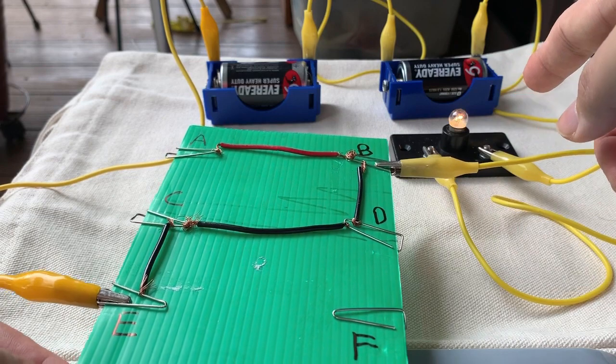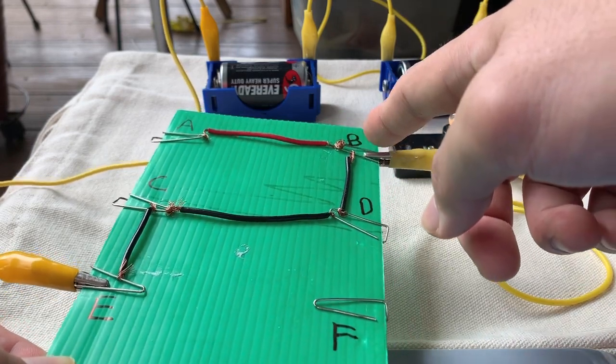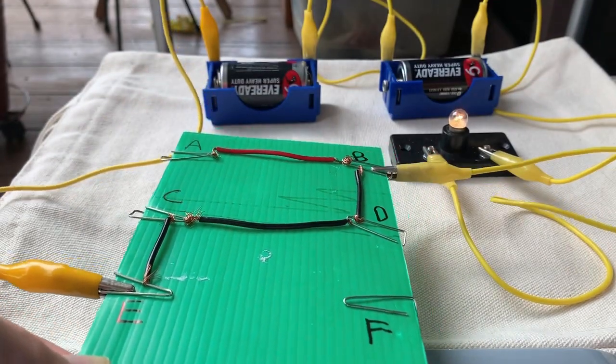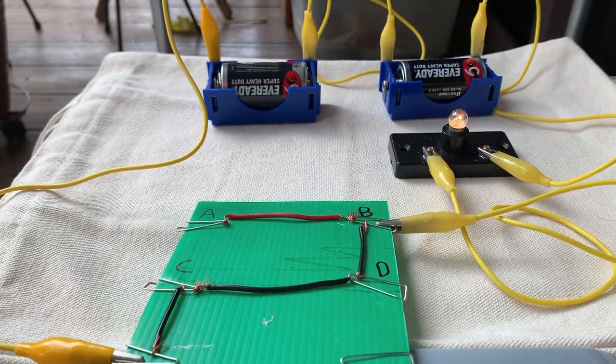So there's a closed circuit. From B goes to D, to C, and to E. So the bulb lights up.